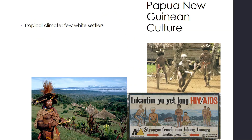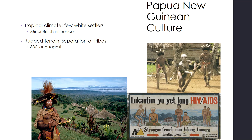In Papua New Guinea, there was a tropical climate, so there were much fewer white settlers. Again, we're looking at more of a mercantile than a settlement colony there. There is some minor British influence, lots of rugged terrain causing lots of separation of tribes, over 836 languages in Papua New Guinea — which is a lot of languages for a very small area — but a long history of violent disputes between tribes. Papua New Guinea mirrors sub-Saharan Africa in terms of development.